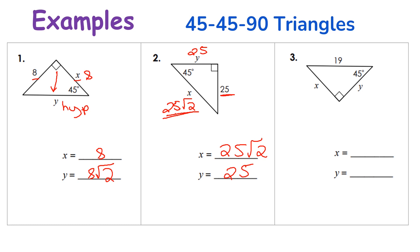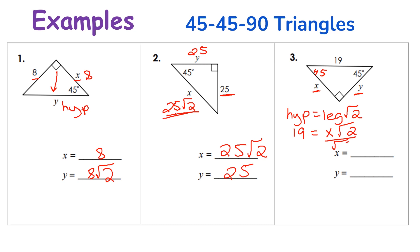Now we're given our hypotenuse, so we're going to set this up a little differently. Remember, legs are congruent, so x and y would be congruent as well. We can set up an equation: hypotenuse equals a leg times the square root of two. Our hypotenuse is 19, so 19 equals x times the square root of two. To solve for x, divide both sides by the square root of two, giving us 19 over the square root of two.